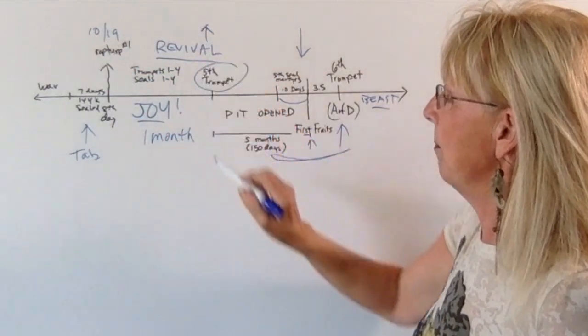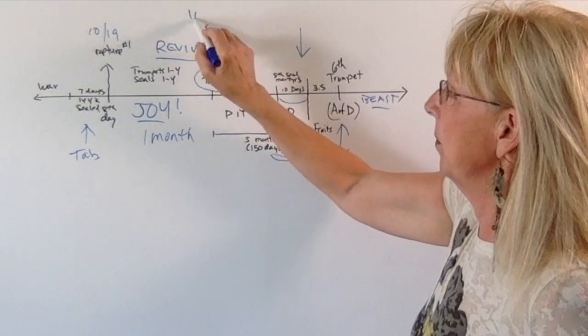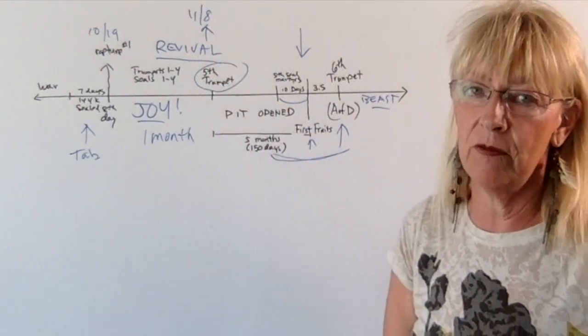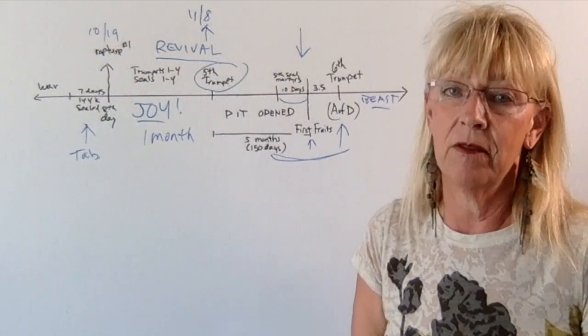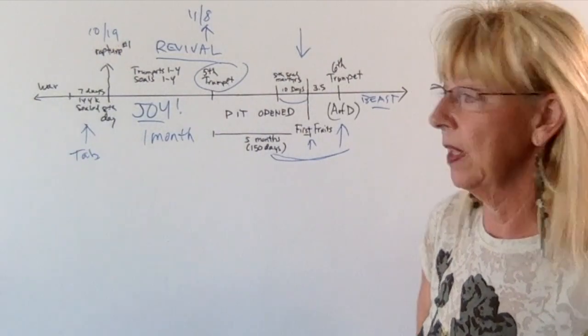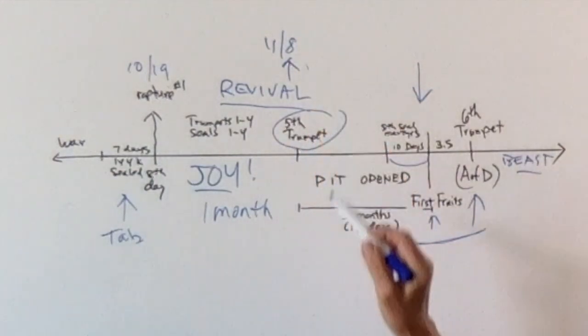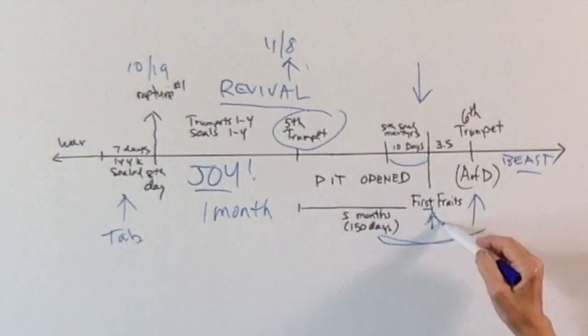If that's the case, the fifth trumpet would most likely be on November 8th, which happens to be a full moon. There actually is a lunar eclipse that day, a full lunar eclipse visible in Israel. If the fifth trumpet is opened on this day and we count 150 days or five months, we'll end up at first fruits in 2023.